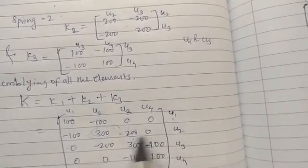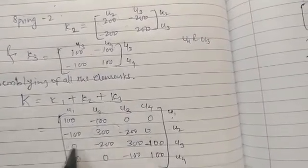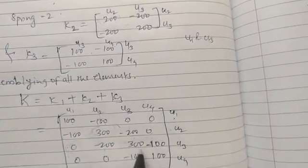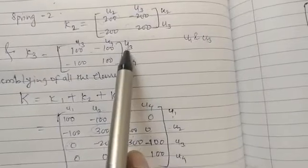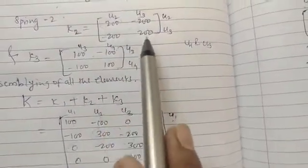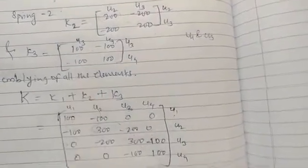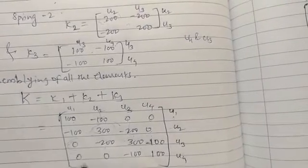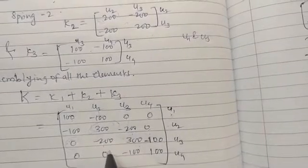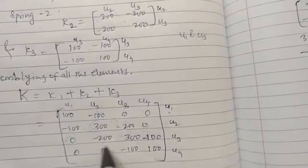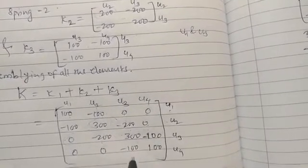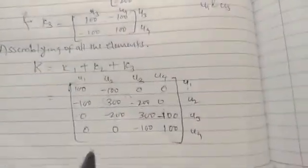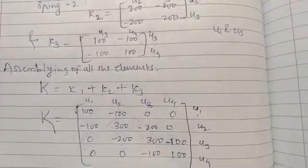For u2-u3, the value is -200. For u3-u3, element 2 contributes 200 and element 3 contributes 100, giving 300. For u3-u4, the element 3 entry is -100. In this way the entire global stiffness matrix [K] is assembled. After assembling this matrix, we move to the general FEM equation.